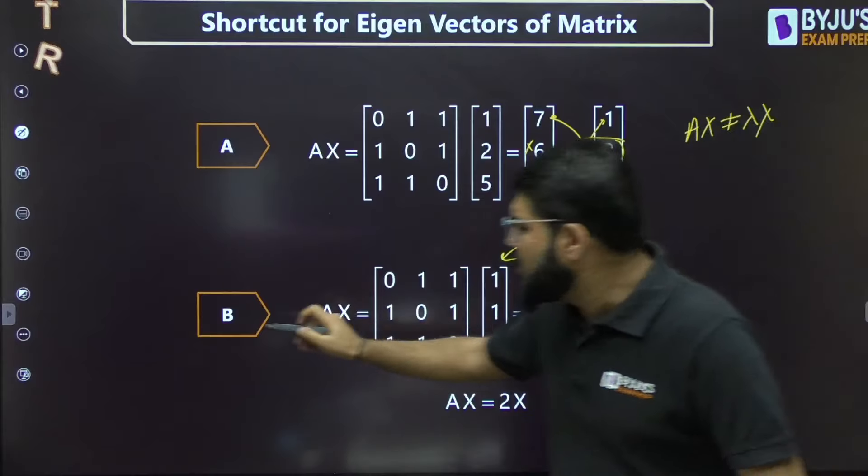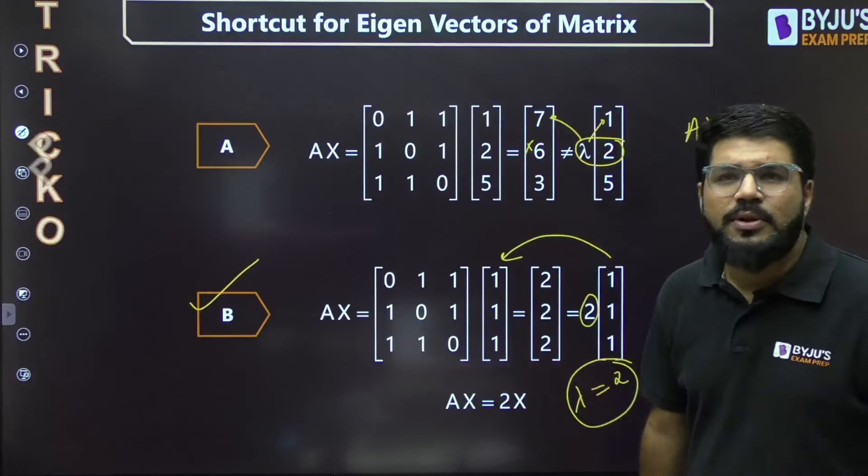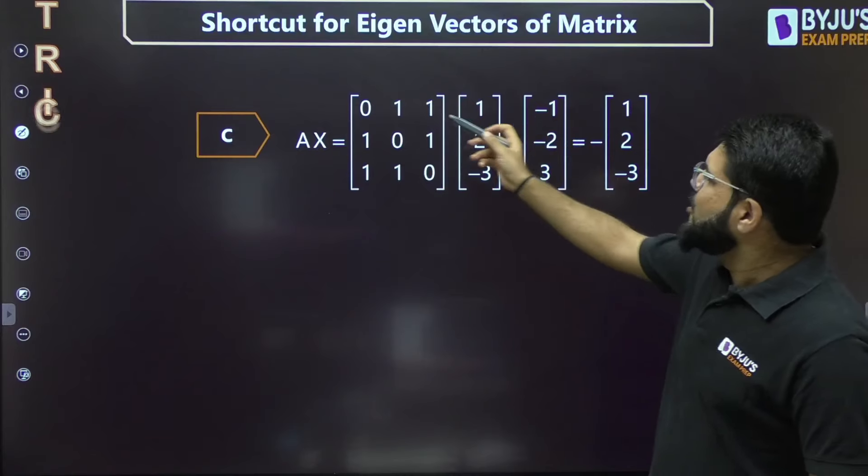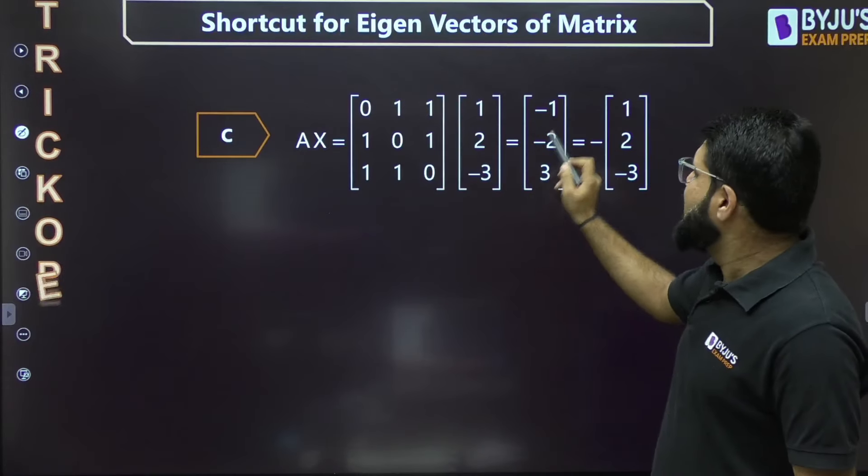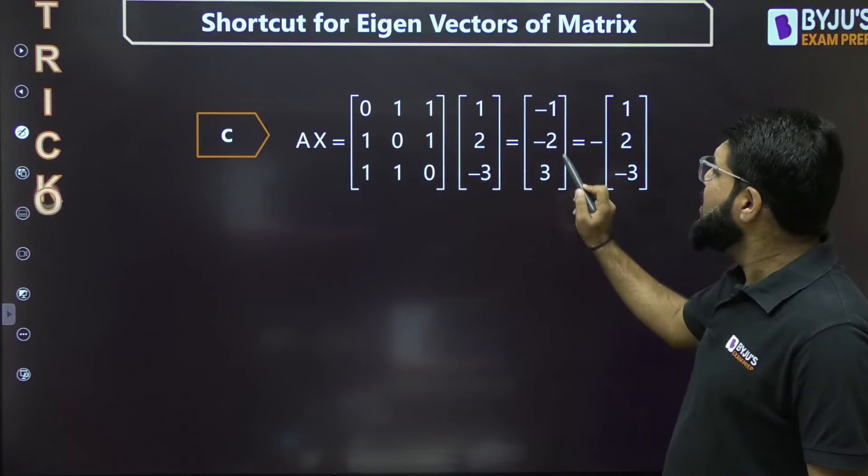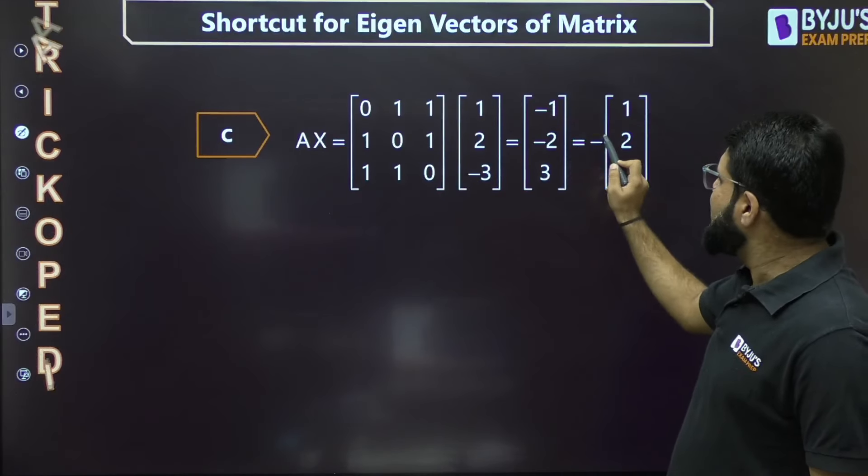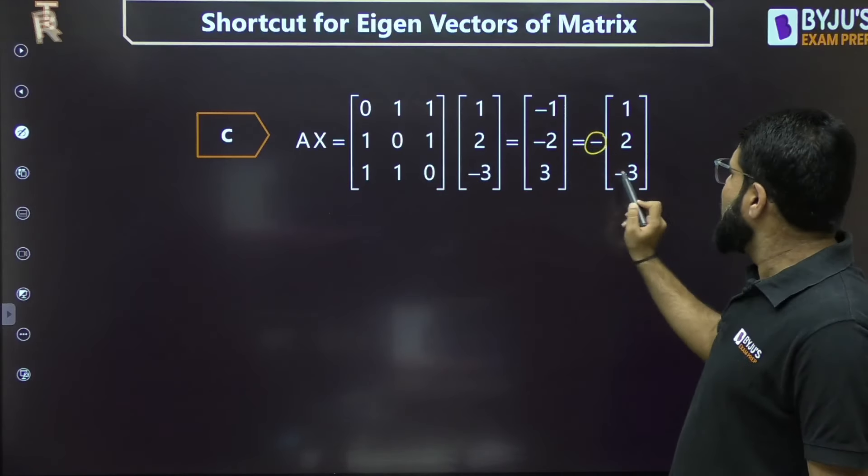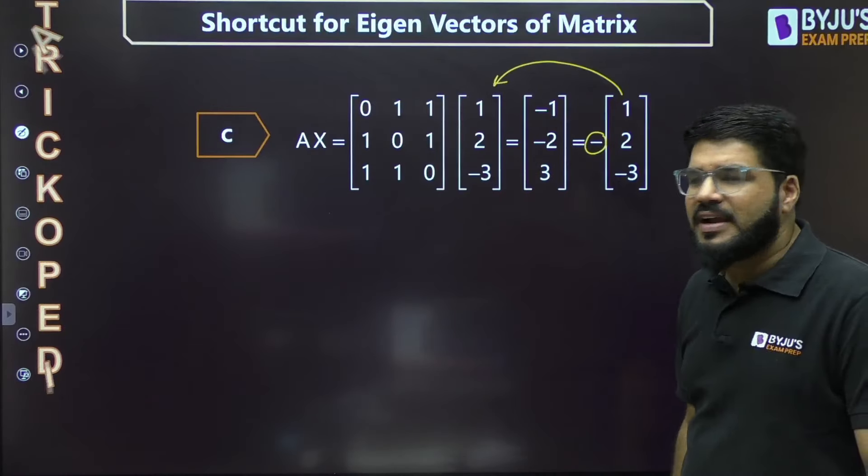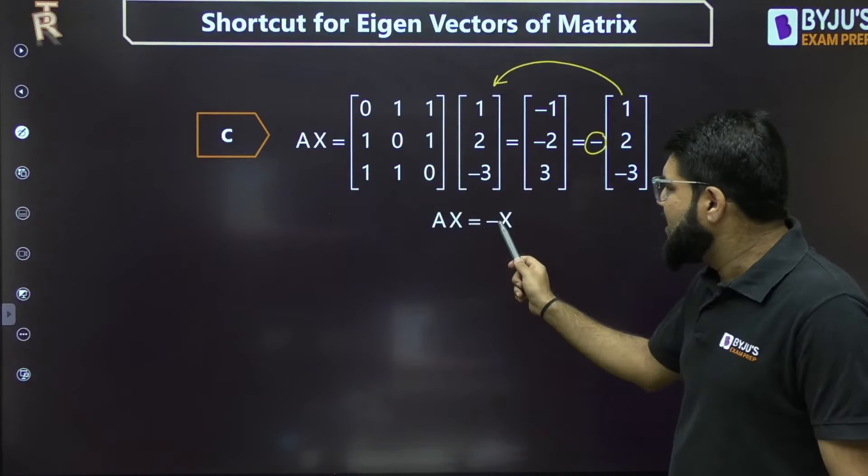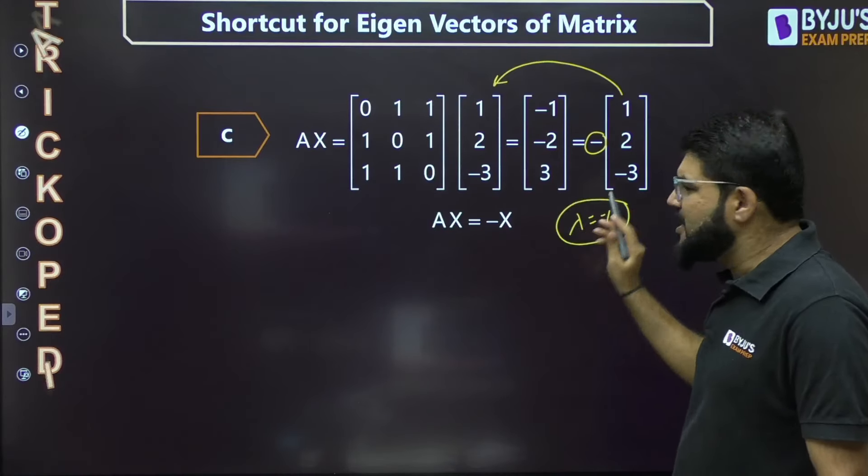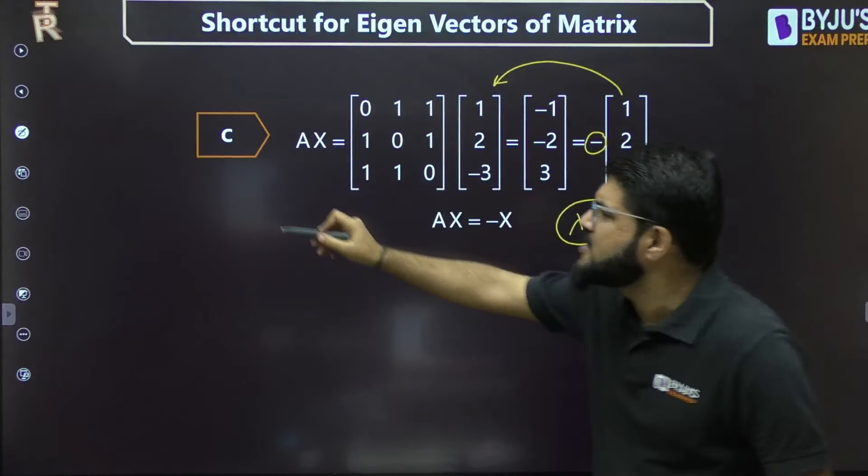If it satisfies Ax = λx for any vector x and any value λ, it should be an eigenvector. For option C: [1, 2, -3], we get [-1, -2, 3]. Take -1 common, you get the given vector. So Ax = -x, some λ is -1. This is also the correct answer. When you try option D, it will not equal λx, so D is not correct.